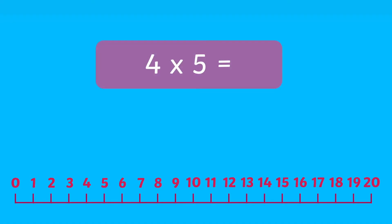In Year 3 and 4, a number line can be used to work out times table questions. For example, if a child is asked what is 4 times 5, they could jump along a number line in 4s five times to reach the number 20.